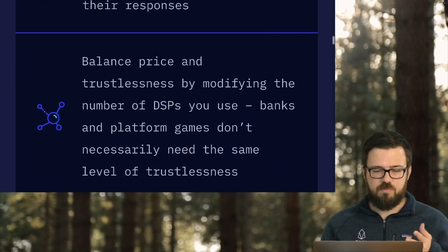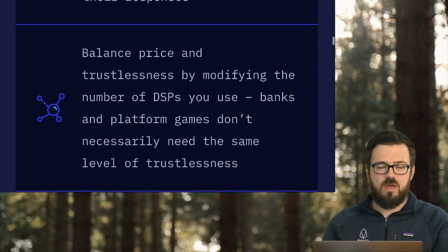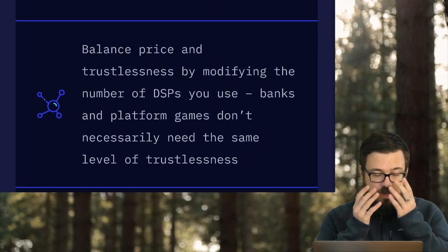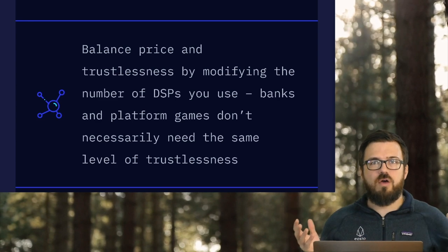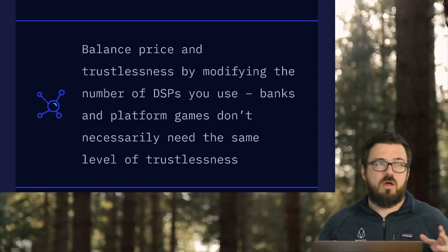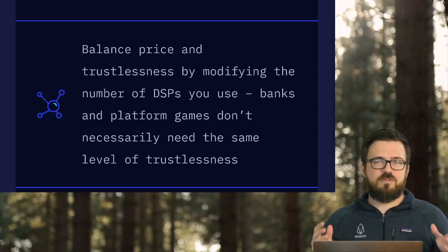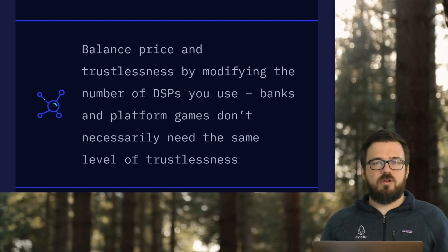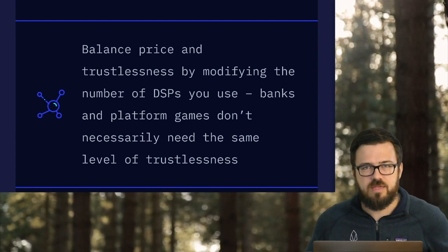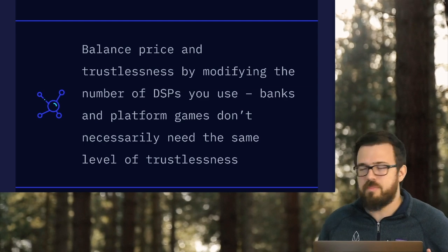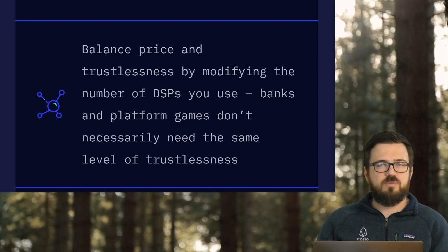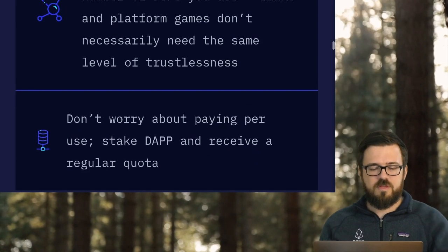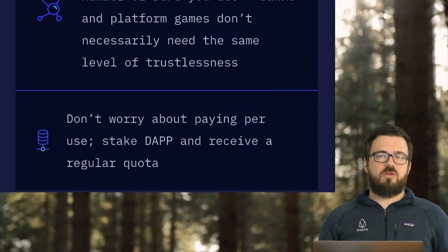In fact, the next point on the website is that you can balance price and trustlessness. Why wouldn't everyone have 100 sources and 100 providers and 100 oracles? Because that costs more money. If you don't need bank-grade security because you're just a simple game, then you don't need bank-grade security. And of course, it's got the free market economic model.